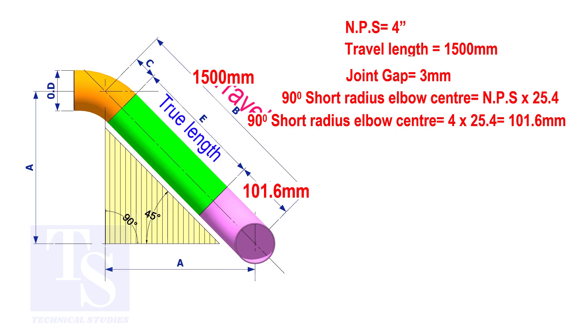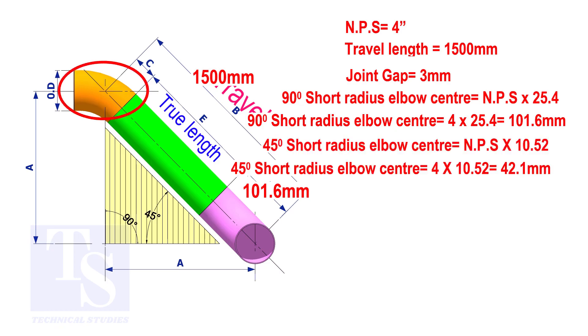To calculate the elbow center of a 45 degree short radius elbow, multiply the nominal pipe size by 10.52. The answer is 42.1 millimeters.